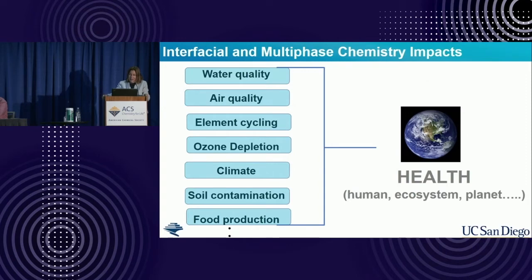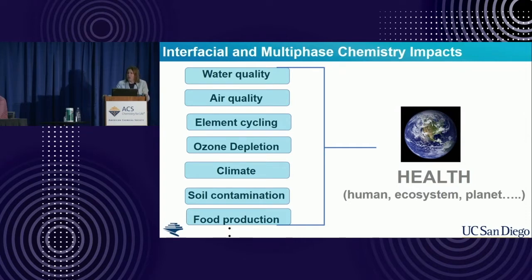Interfacial multiphase chemistry impacts everything—taking a very broad view. It impacts water quality, air quality, element cycling, ozone depletion, climate, soil contamination, even food production. This is something that is vast and affects health—not just human health, but ecosystem health and even planet health.